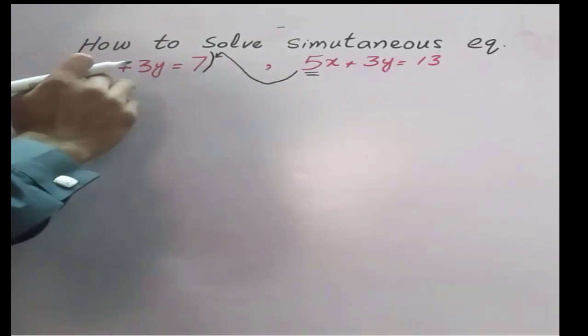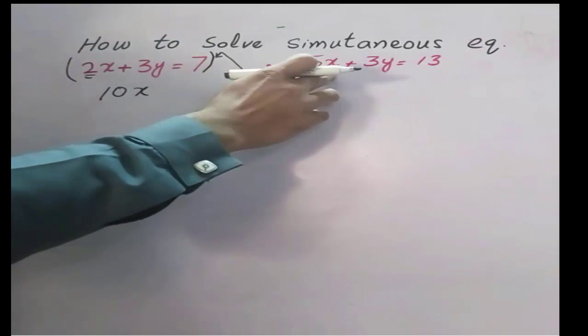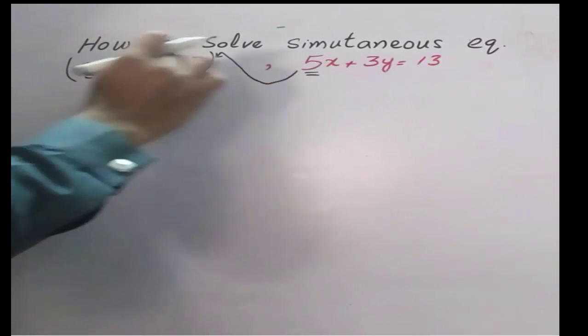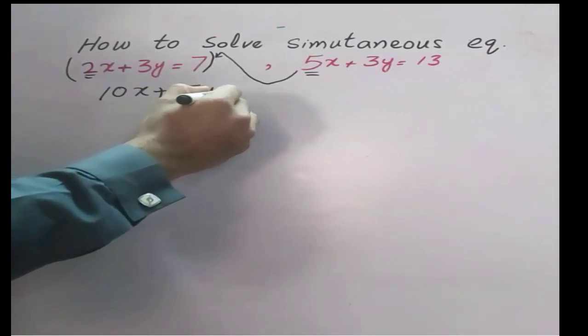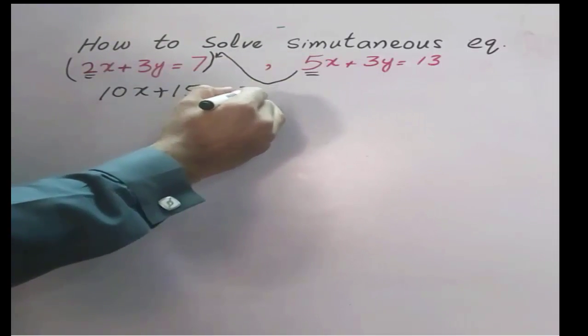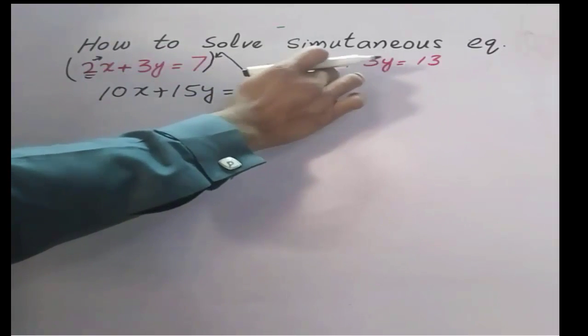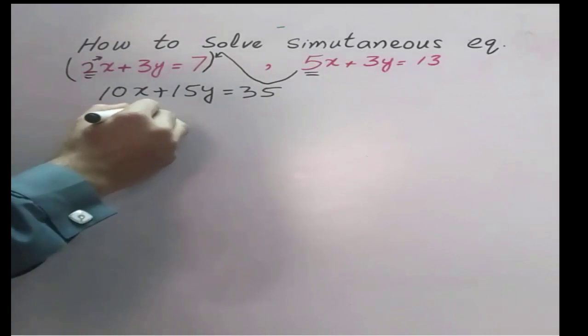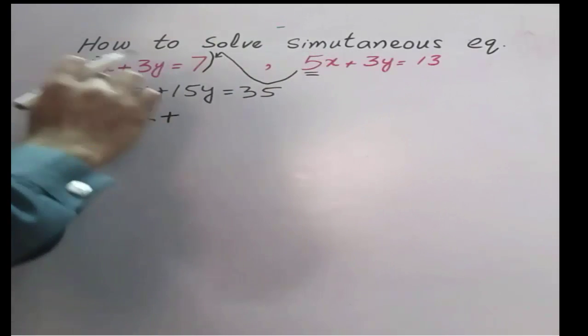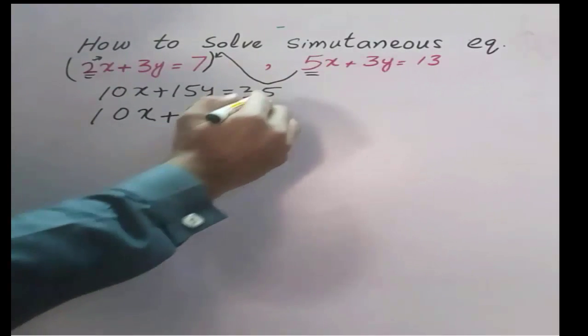See, 5 times 2 is 10x plus 5 times 3 is 15y is equal to 5 times 7 is 35. Now take this 2, multiply with this equation: 2 times 5 is 10x plus 2 times 3 is 6y is equal to 2 times 13 is 26.